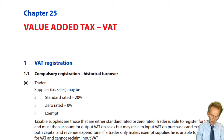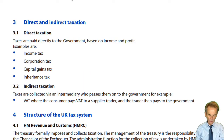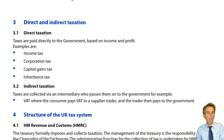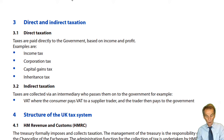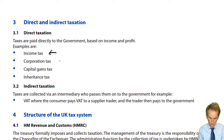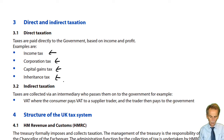Let me take you back to and remind you about one area from that first chapter — a comparison of direct and indirect taxation. All of the taxes that we've seen so far — income tax, corporation tax, capital gains tax, and inheritance tax — are all said to be direct taxation.